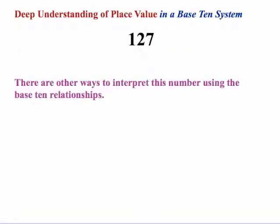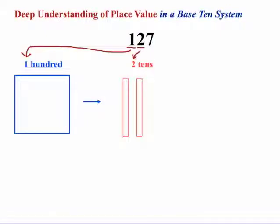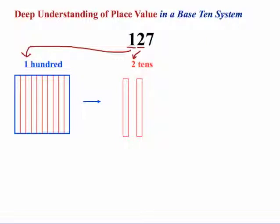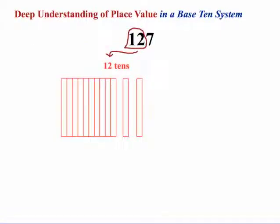Now there's other ways to interpret the same number using base ten relationships. For example, if we look at the hundreds place and the tens place, we have one hundred and two tens. But what we can do is take the one hundred and change that to ten tens. So now we can look at it as being twelve tens plus our seven ones. It's a slightly different perspective.